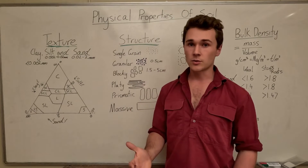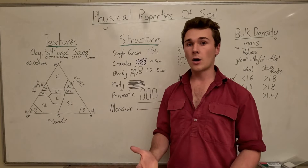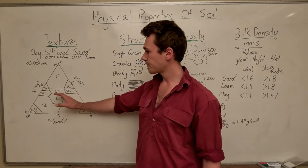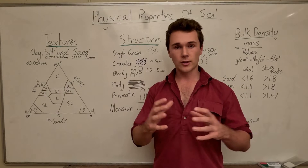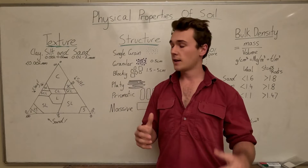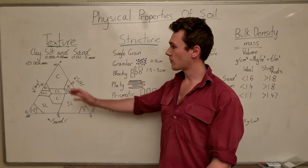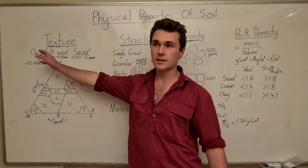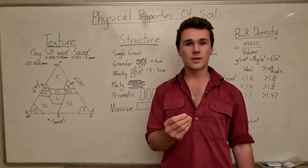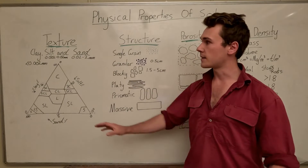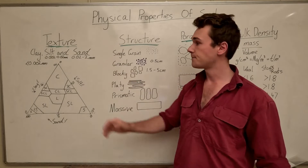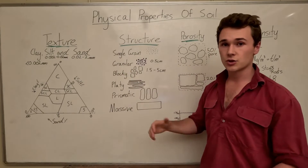This is super important for determining many other soil characteristics because each particle type behaves differently. For example, vertosols, which are very high in clay (35%+), have a shrink-swell action so the soil cracks up a lot. Clays also tend to disperse quite easily, which means you can get surface sealing. All these things are determined by our texture.